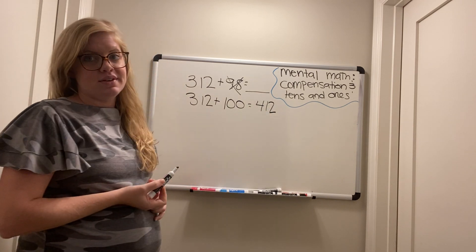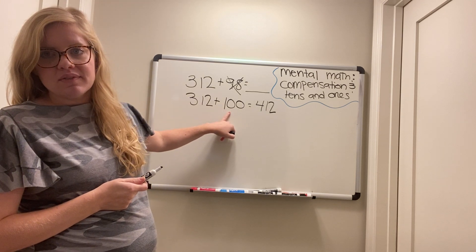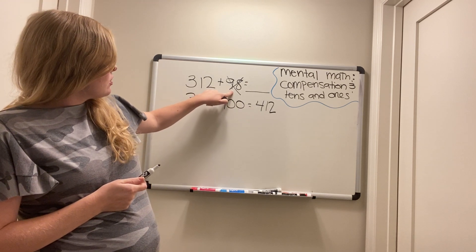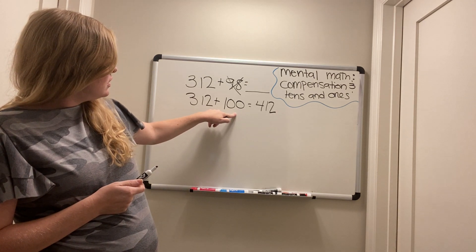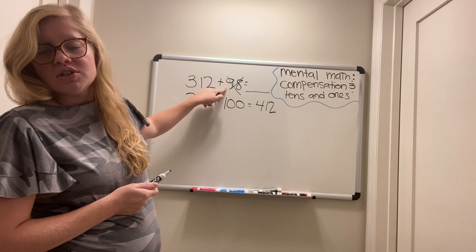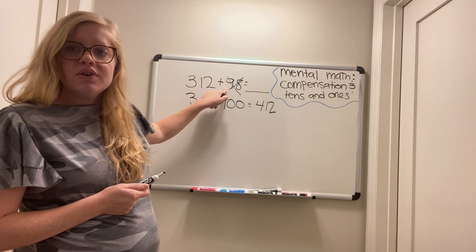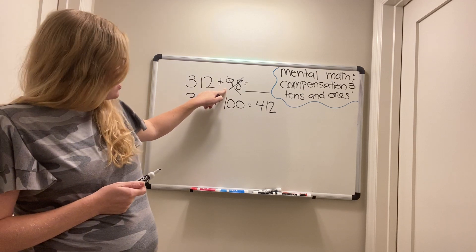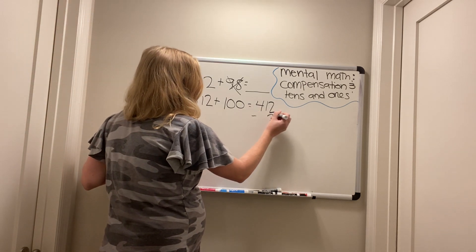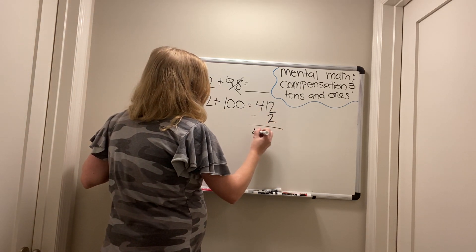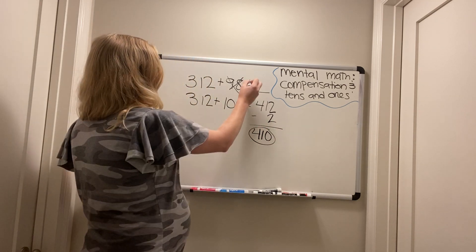But wait, we are not done. Because this isn't actually the number that we're adding, right? This is the number we're adding. So how many more did we add to this one than we did to this one? 2, right. To get from 98 to 100, you need to add 2. So, in order to get back down to 98, you need to subtract 2. And then we get our answer of 410.